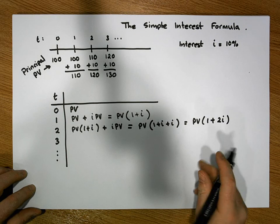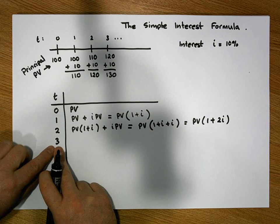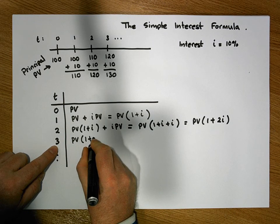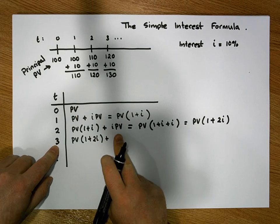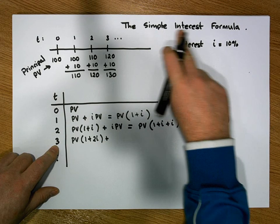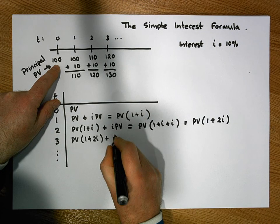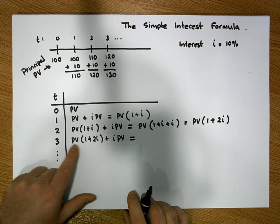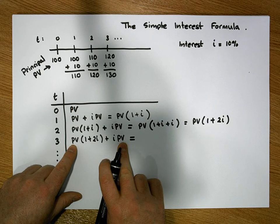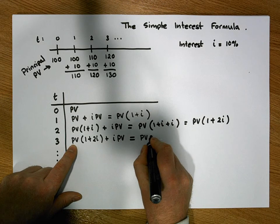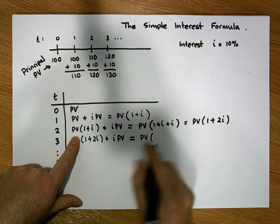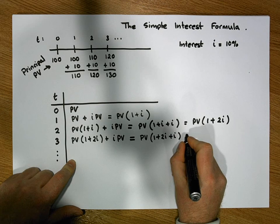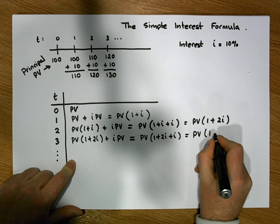Continuing to year three: we have what we had in the previous year — PV times (1 + 2I) — plus an interest payment of I times PV. Again taking PV as the common factor, what's left is (1 + 2I) and I, so this simplifies to PV times (1 + 3I).